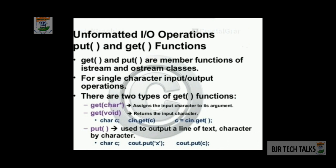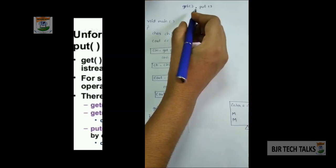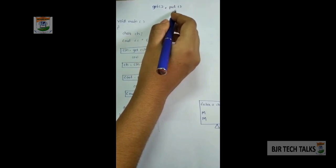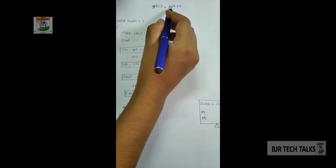Here we can see three ways to use the get function: declare a character c, then use either cin.get(c) or c = cin.get(). The put function is used to output a line of text character by character. There are three ways to use the put function: declare a character c, then use either cout.put(x) or cout.put(c). The get function is used to take a character as input, and the put function is used to give a character as output.